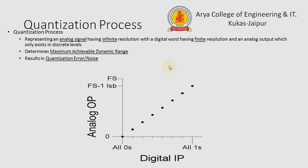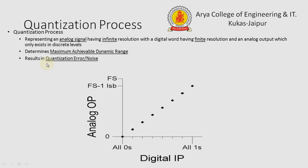The quantization process was also studied in analog to digital converter, as the same process follows. Quantization represents an analog signal having infinite resolution with a digital word having finite resolution. The analog output only exists in discrete levels, which determine the maximum achievable dynamic range — that is, the maximum peak that the quantized analog output can produce.